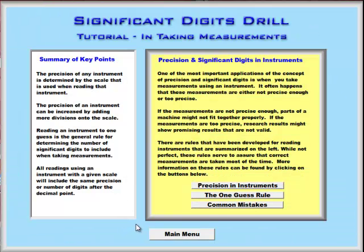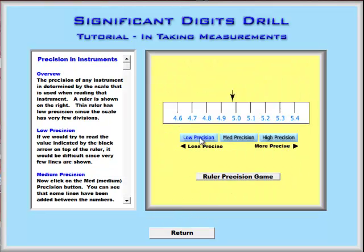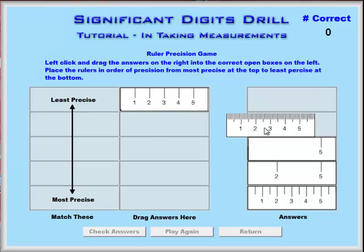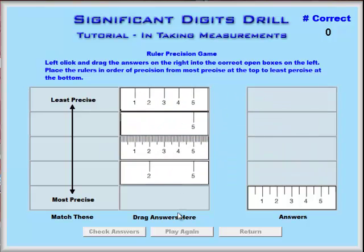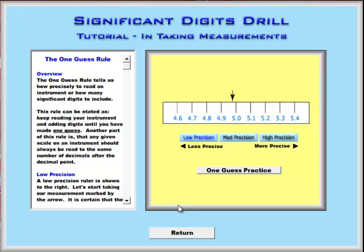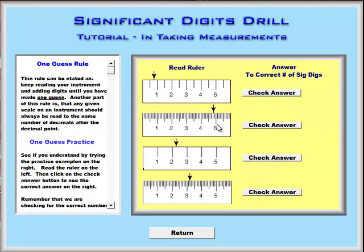Finally, taking measurements. We talk about exactly what we mean by precision, showing the fact that by adding more divisions on your measuring device you are adding to the precision. There is a little precision game for students to demonstrate they understand the concept. We also talk about the one-guess rule, which shows students exactly how to determine how many digits should be significant when measuring with instruments.